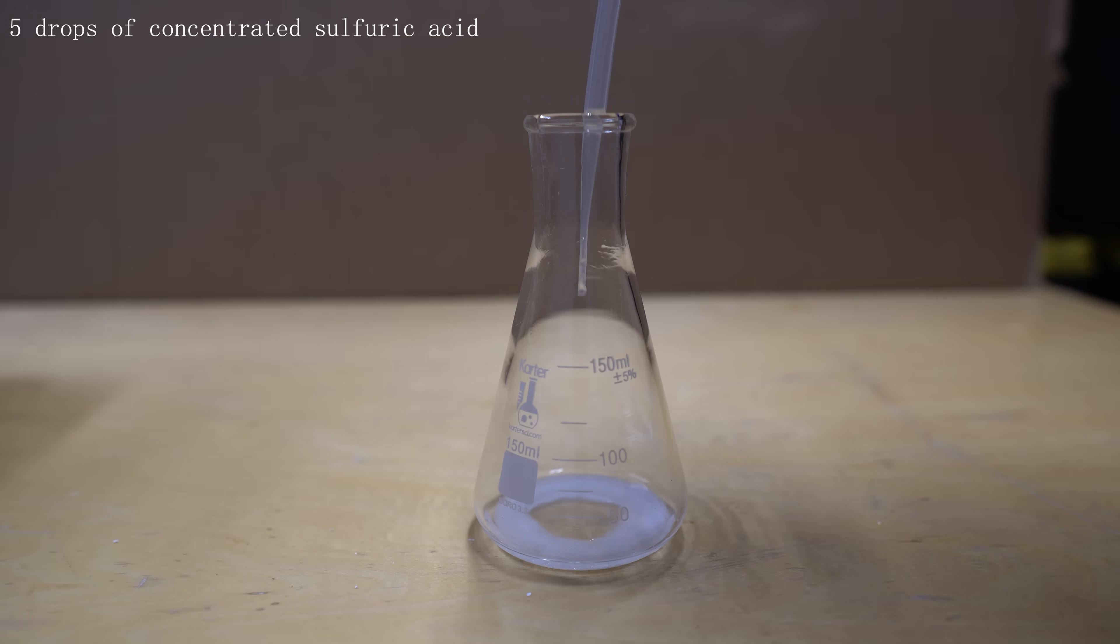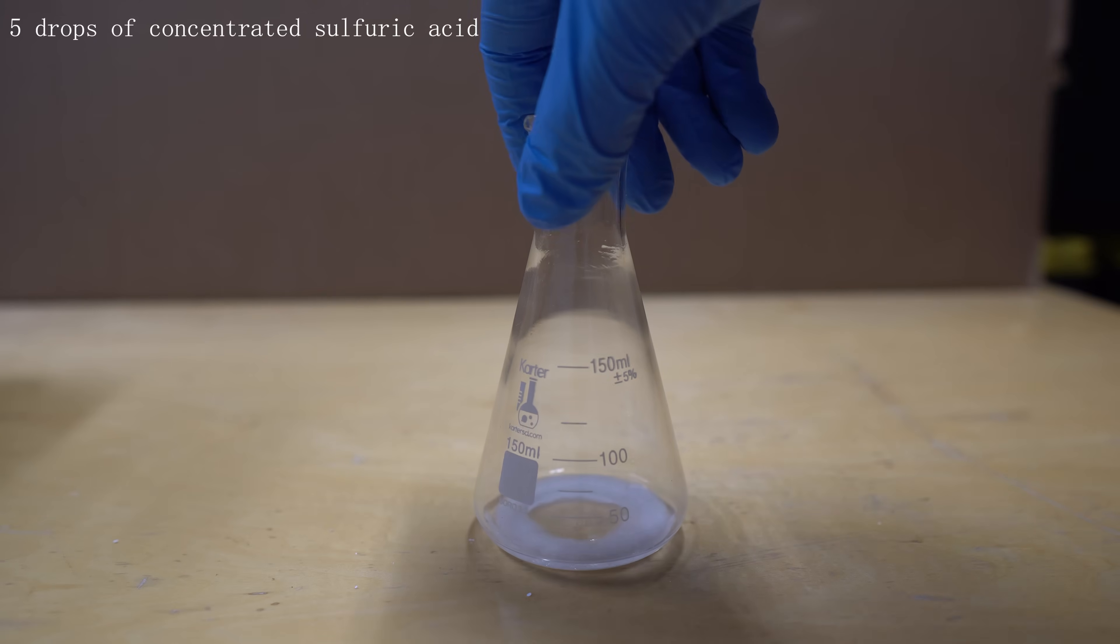5 drops of concentrated sulfuric acid was added to the flask to act as a catalyst for the reaction. It speeds it up by using the positive hydrogen ions from the sulfuric acid. Now normally, I just use it for acid fights with my friends, but it works very well in this reaction.